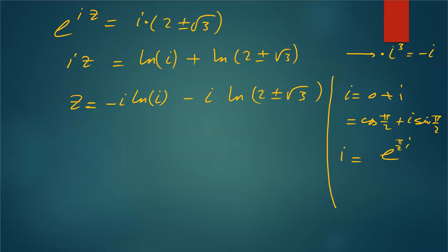So logarithm of i, ln(i), is simply π/2. Of course you can add the periods for the angle, but that I will add at the end. So -i ln(i), when you multiply that by -i, times π/2 i, of course that will be only π/2 because i times -i is 1.